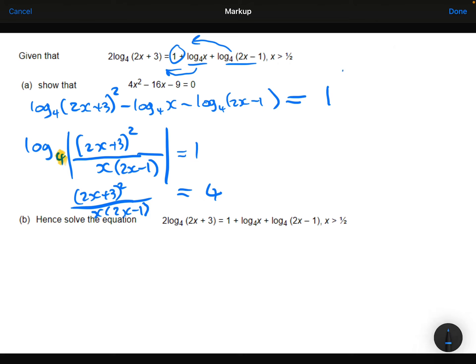Right, carrying on up here now. I'm going to get rid of the fraction by multiplying both sides by x times 2x minus 1. So bringing this up here, multiplying.